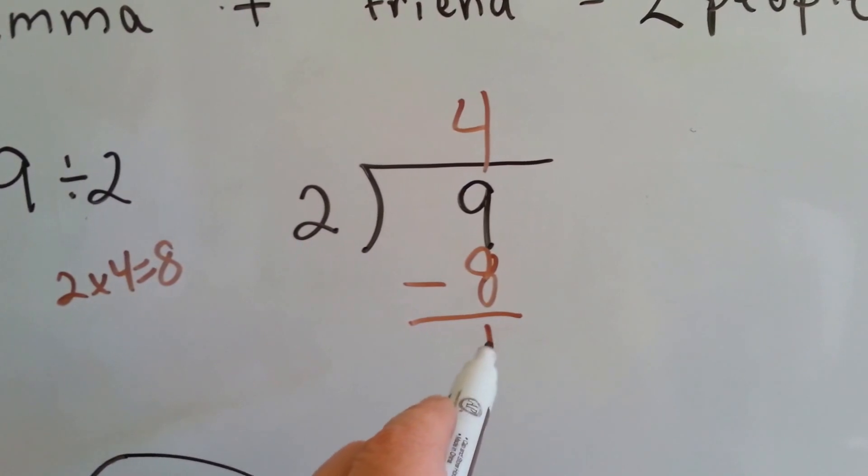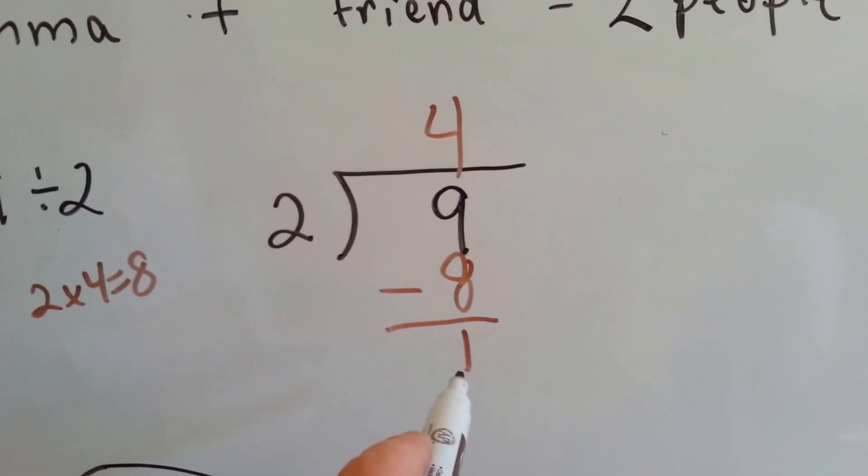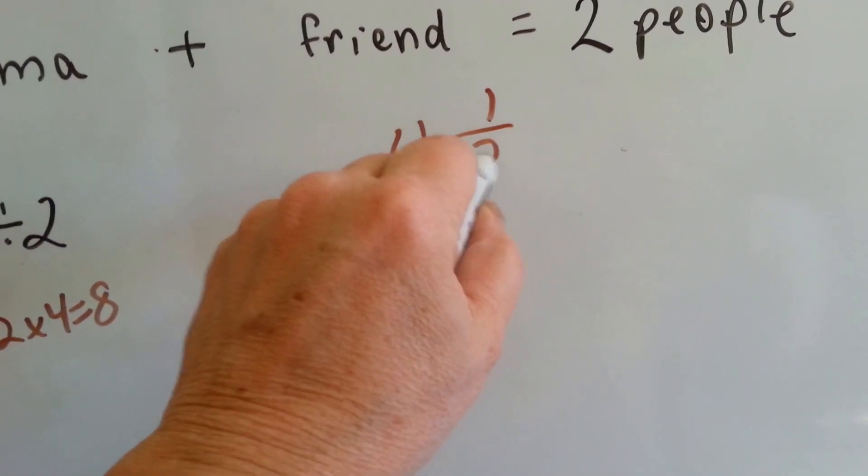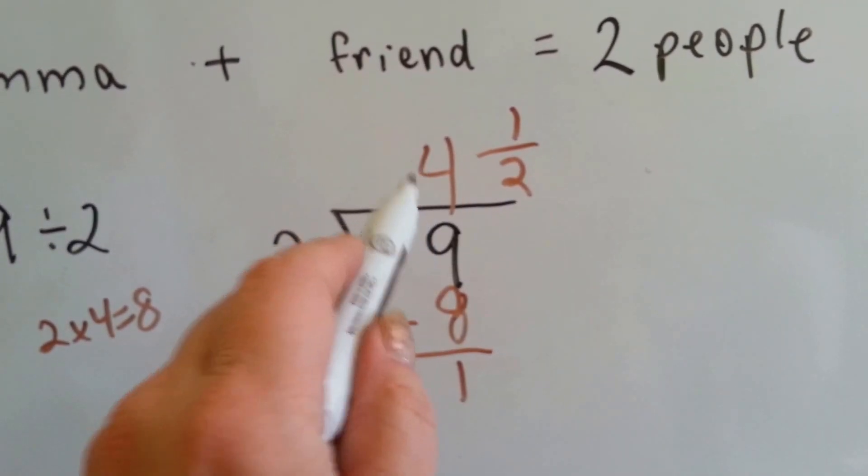We take the one remainder and instead of writing the R1, the remainder one, we put it on top of the divisor. So we're going to have a one on top of a two. And that's our fraction, four and a half.